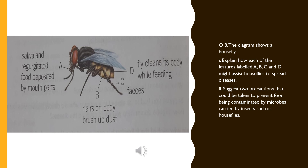Part C: The feces spoils the food and spreads diseases. Part D: When the fly cleans its body, germs and microbes enter the food and contaminate it.